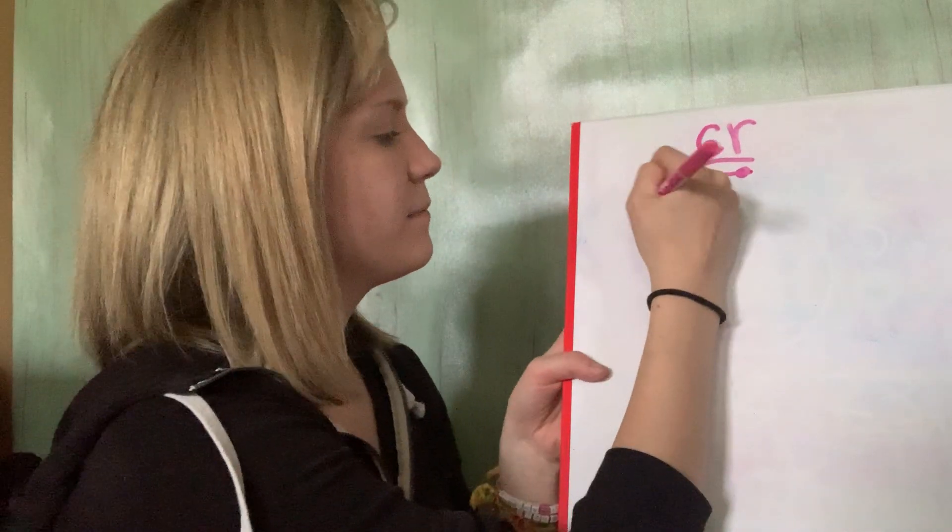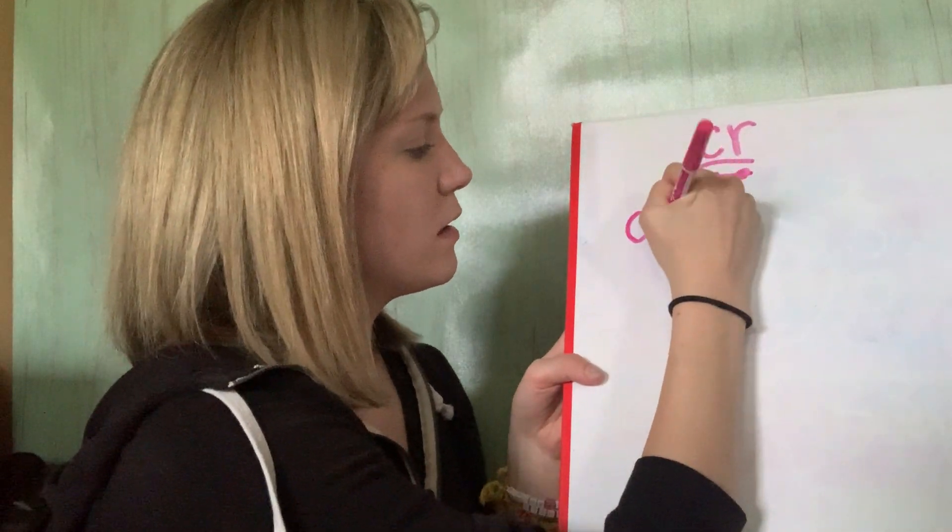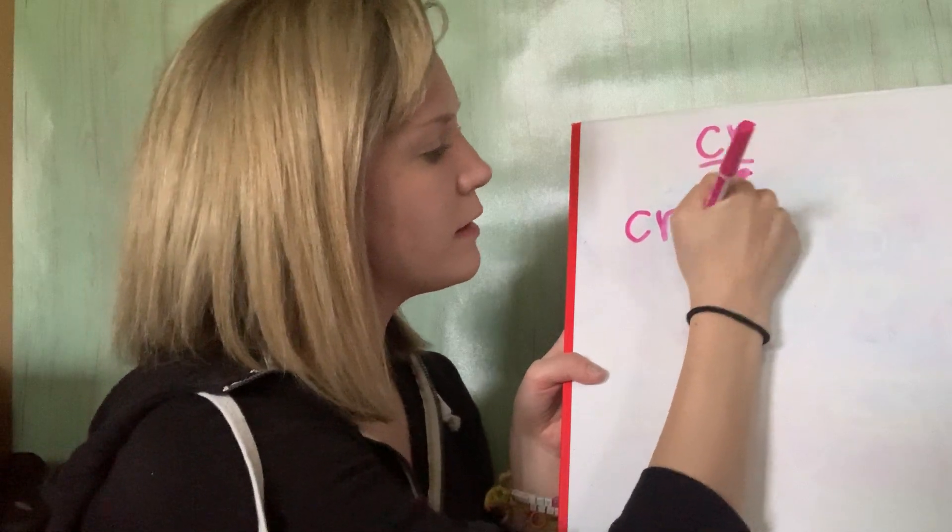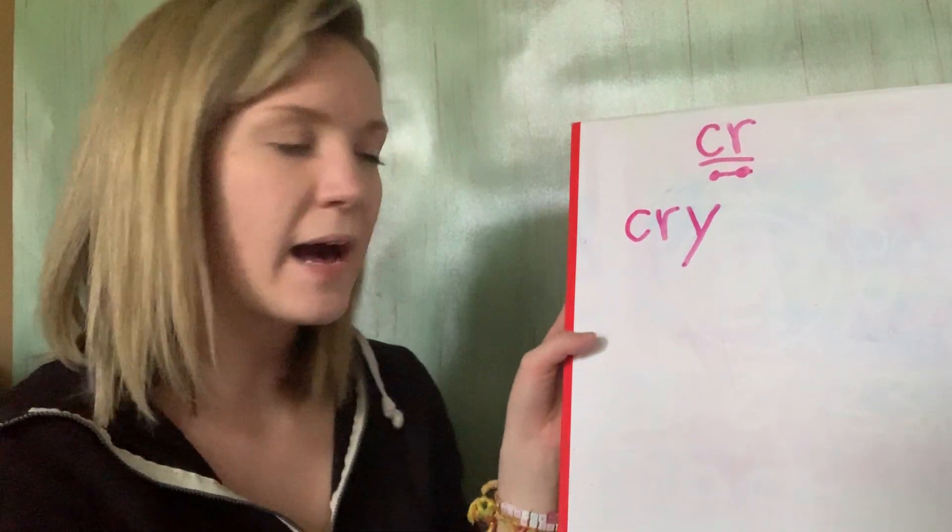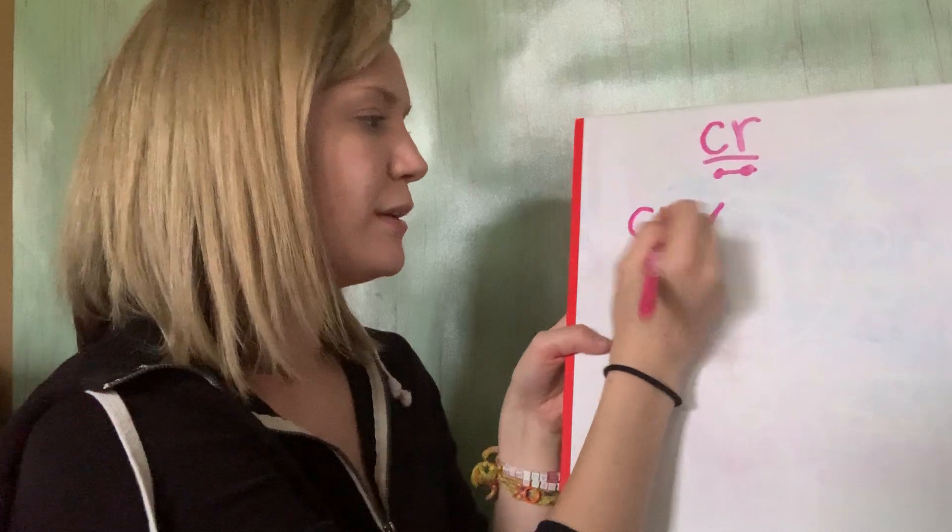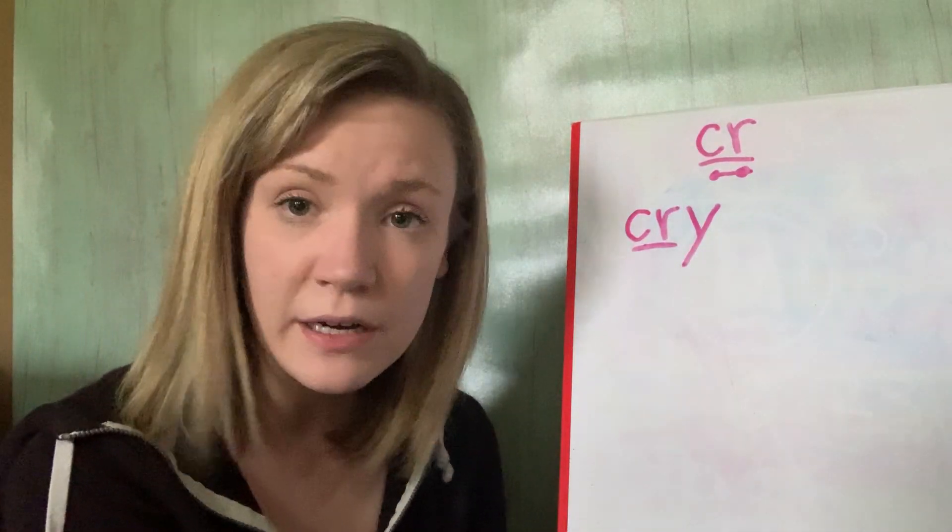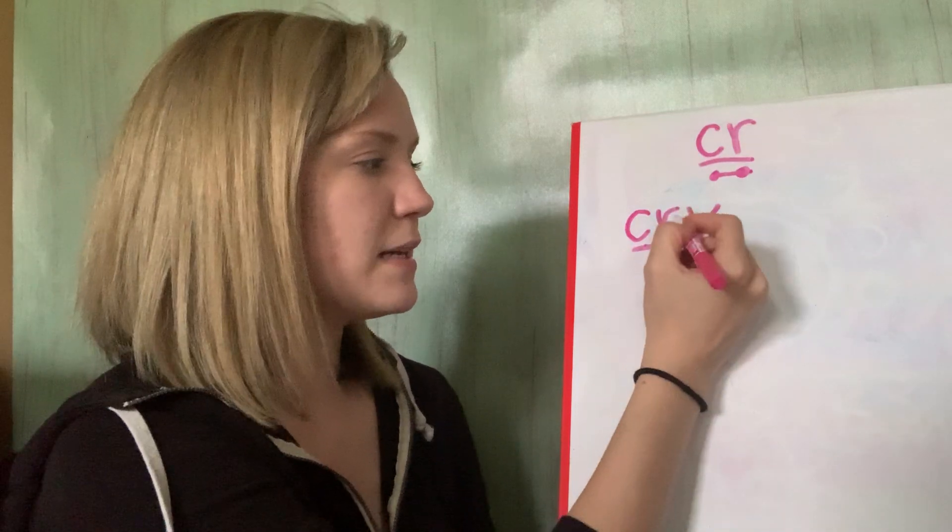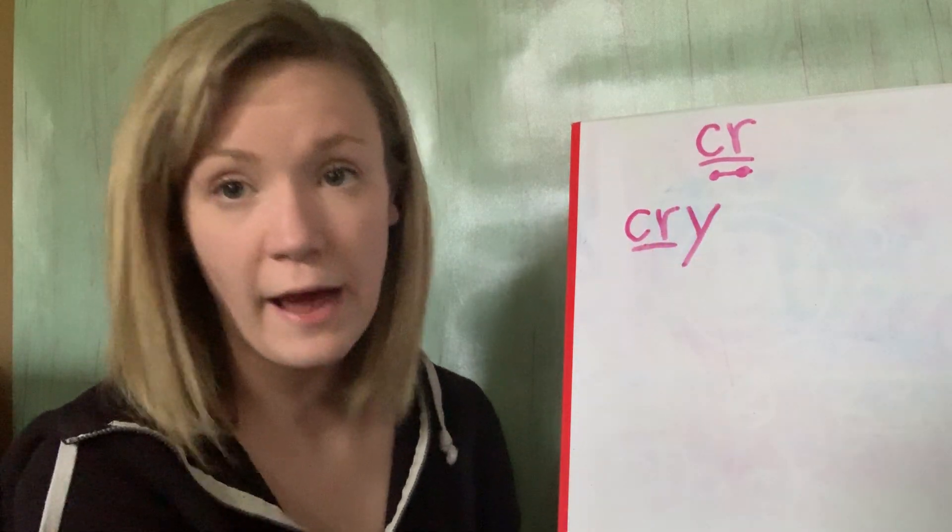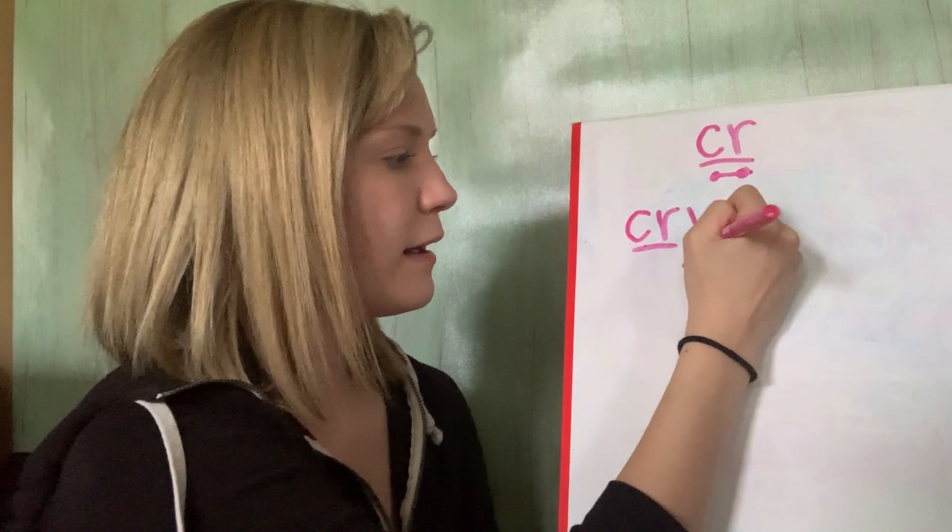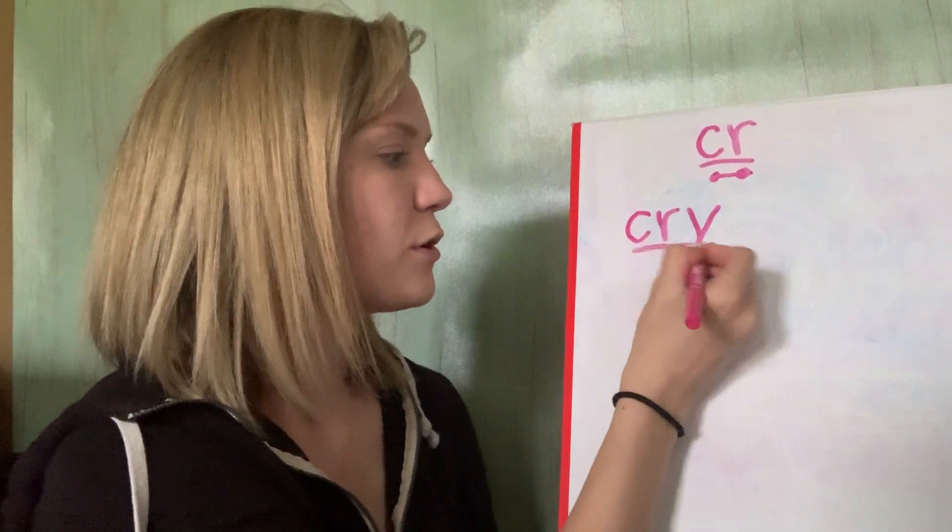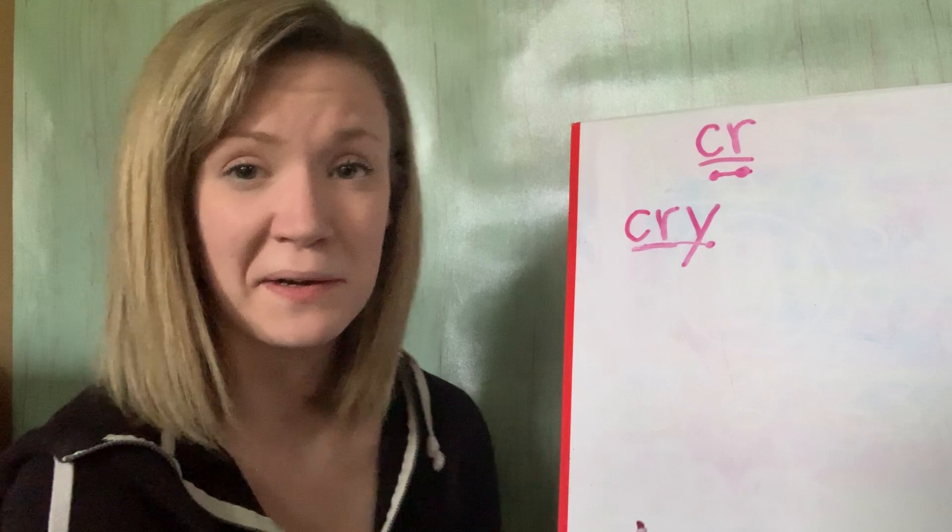So my Cur word is going to be the word cry. So there's my cur. Remember whenever that Y stands alone at the end of the word with no vowels in between it or before it or after it, it's going to make that sound I. So cur, I, let's put it together. Cry. So cry has that, you know, that C R at the beginning of the word.